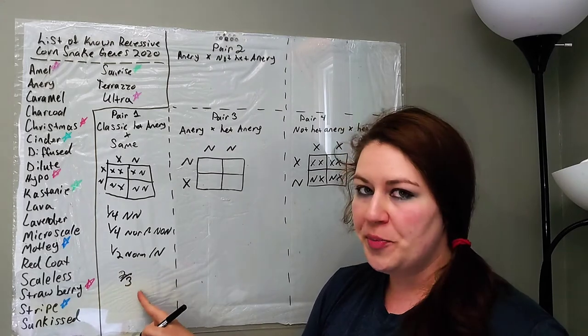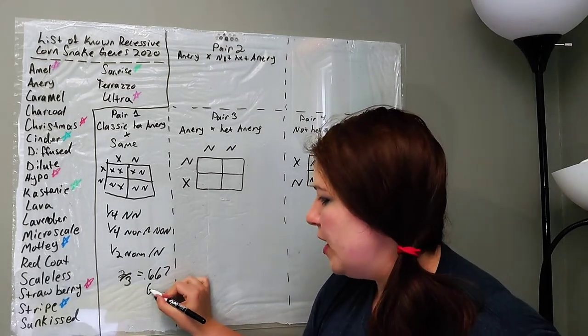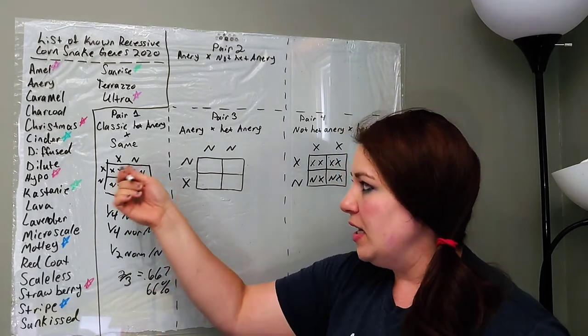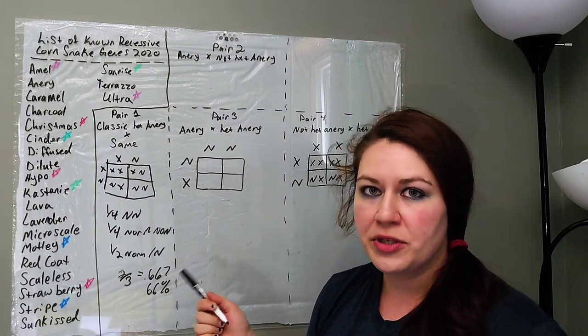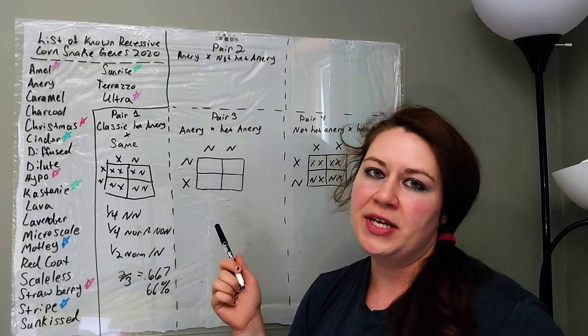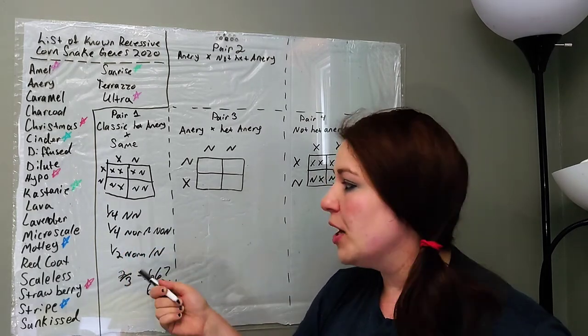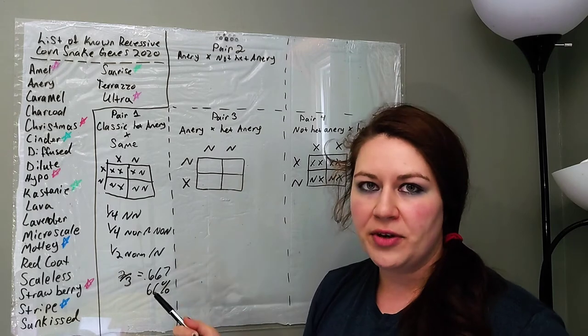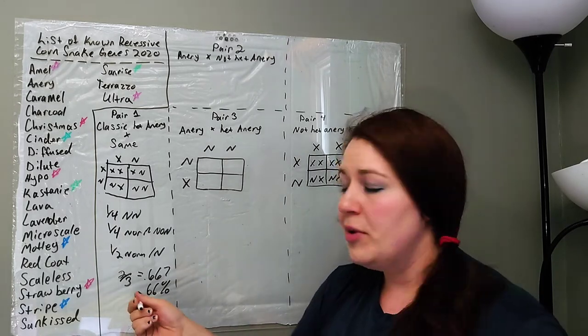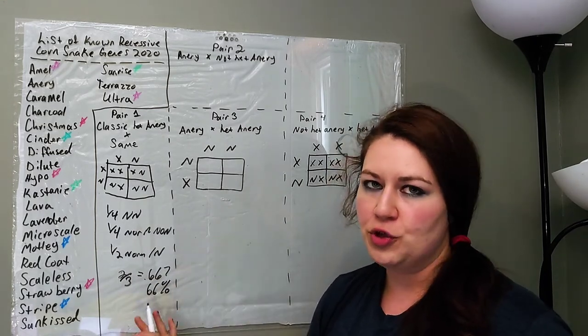And, essentially, if you divide two by three, you get 0.66666, or you can round it up to 0.67, which is where people get the 66 or 67 percent. So, this means that any of these normals have a 66, or rather 67 percent chance of being het for anery. And, since you don't know which ones those are, you can label all of the normals as being 66 percent possibly het for anery. However, like I said, in recessive genes, you're not going to know which ones those are. We will get to different things when we talk about incomplete dominant genes and dominant genes and stuff like that. But, when it comes to recessive, these 66 percent possibly het are not going to be visual for the anery gene.